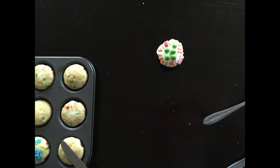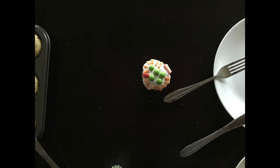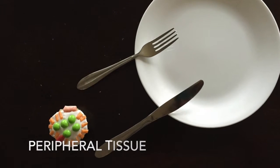This nascent HDL then travels through the blood to peripheral tissues such as myocytes and adipocytes.